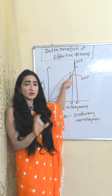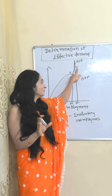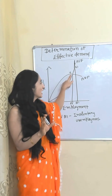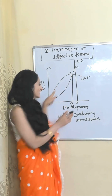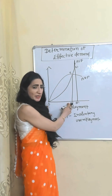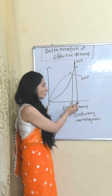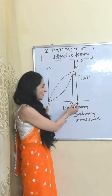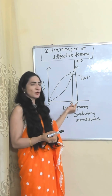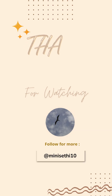However, the effective demand point E is not a full employment point. E1 is the full employment point. At point E, only ON employees are working, but for full employment we need ON1 employees. Therefore, the gap between N and N1 will be called involuntary unemployment in the economy.